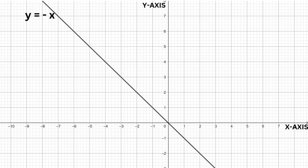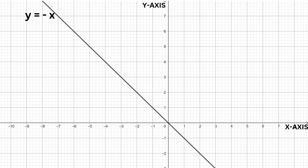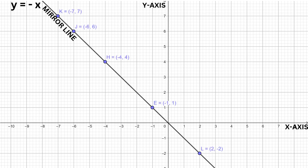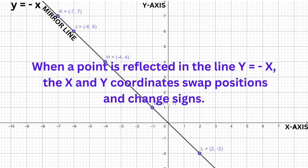Another interesting line is the line y equals negative x. This line is also a diagonal line, perpendicular to the line y equals x, and passes through the origin. All points on this line have the same absolute x and y coordinates, except that the signs are different.